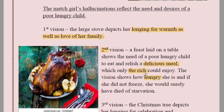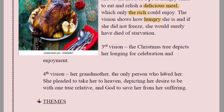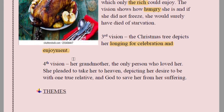The vision of the feast shows how hungry she was. If she had not frozen to death she would surely have died of starvation. Third vision — the Christmas tree — depicts her longing and desire for celebration and enjoyment, like other young children. The Christmas tree is also a symbol of endurance, of hope, of evergreen happy life. She wanted to stand bravely like the Christmas tree, fighting the cold.